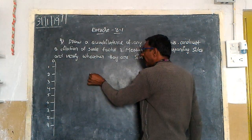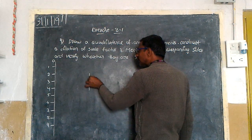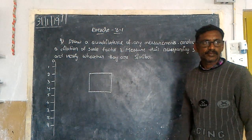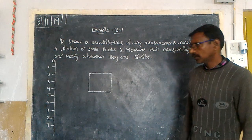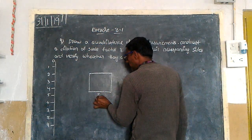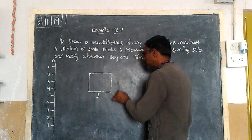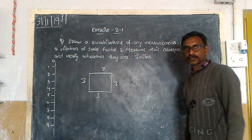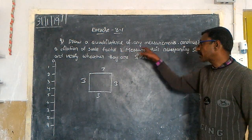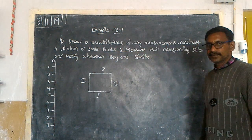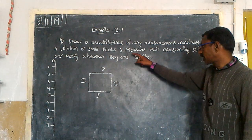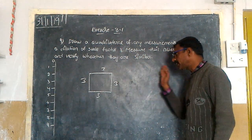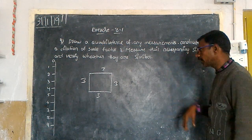Suppose I would like to take a square — this is a square, some three units. This is three, this is three, and this is three. The scale factor given here is three, so we take it three times.